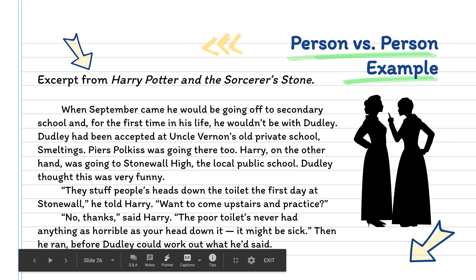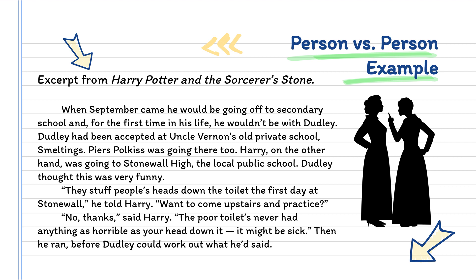Person versus person — we're going to use an excerpt from Harry Potter and the Sorcerer's Stone: 'When September came, he would be going off to secondary school, and for the first time in his life, he wouldn't be with Dudley. Dudley had been accepted at Uncle Vernon's old private school, Smeltings. Piers Polkis was going there too. Harry, on the other hand, was going to Stonewall High, the local public school. Dudley thought this was very funny. They stuffed people's heads down the toilet the first day at Stonewall, he told Harry. Want to come upstairs and practice? No thanks, said Harry. The poor toilet's never had anything as horrible as your head down it. It might be sick. Then he ran before Dudley could work out what he'd said.' Here we have a person versus person conflict — Harry Potter and his cousin Dudley, where Dudley is the opposing force and Harry uses his wit to escape trouble.